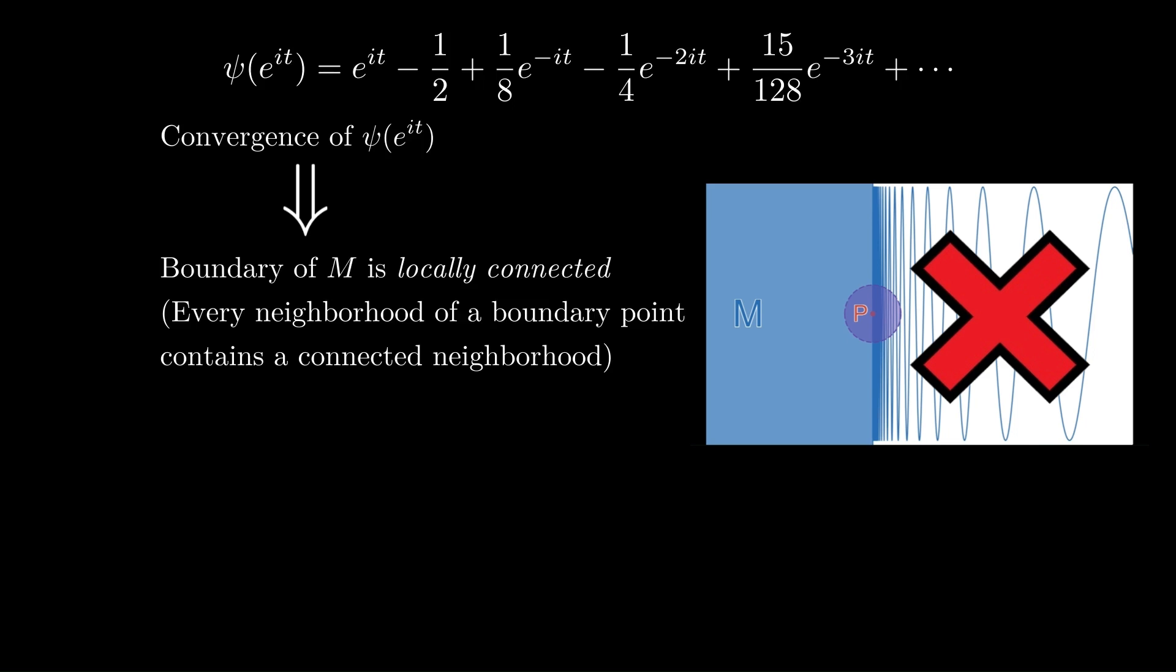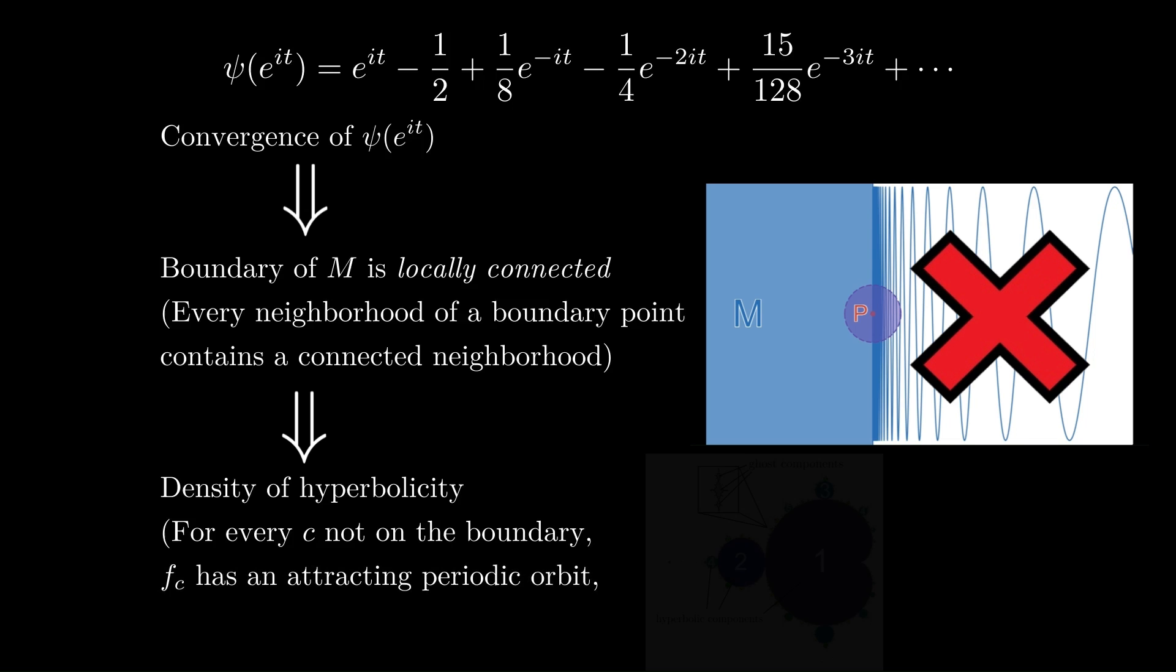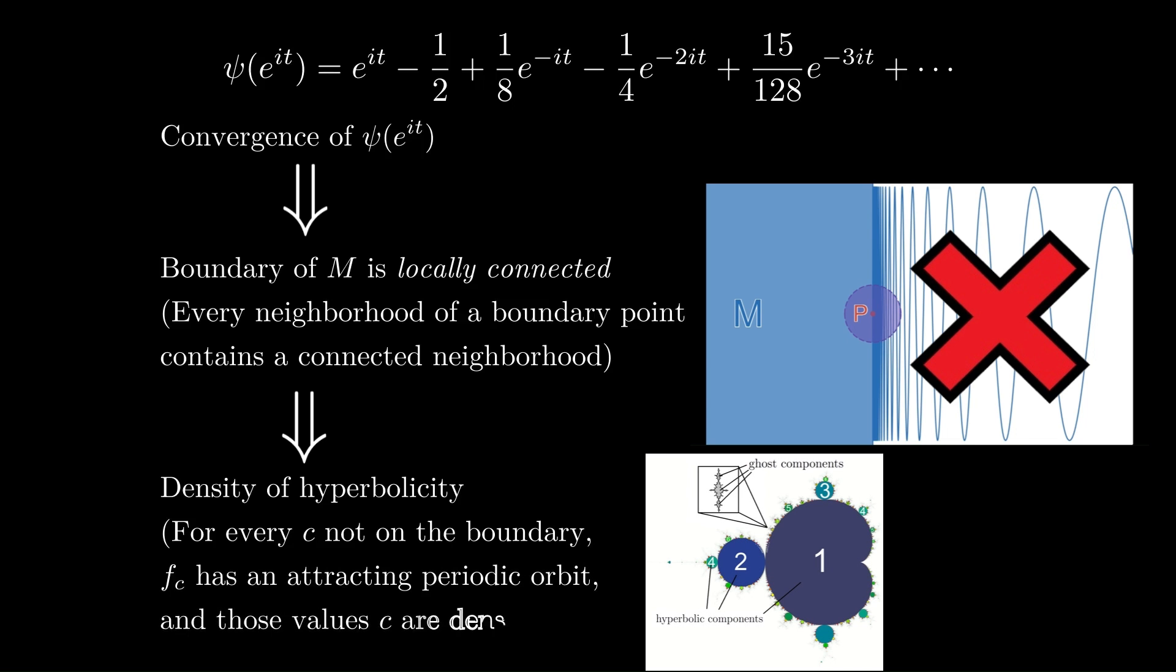And this locally connected conjecture implies the hyperbolicity conjecture that I mentioned earlier. So it implies that there are none of these ghost components. So every region in the interior does have this periodic cycle in the limit. So not only are the points bounded, but they always settle into a finite orbit as long as you're not on the boundary.